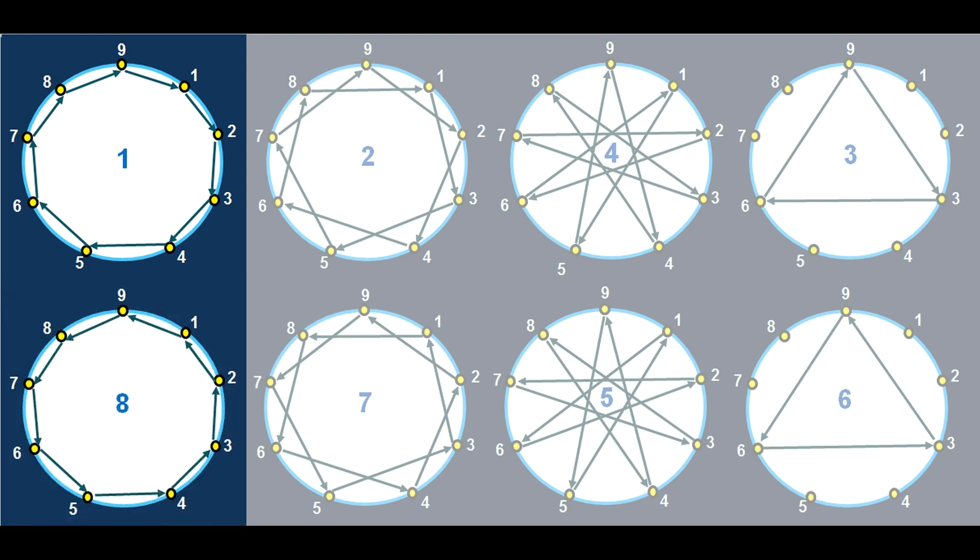And now if you look at the 8 times table, using the Mod 9 lens, we see that 8 times 1 is 8, times 2 is 16, so 1 plus 6 is 7, 3 times 8 is 24, so 2 plus 4 is 6, etc, etc. And you work your way around, and you see that actually it makes the same geometry as the 1. And that was quite a surprise.